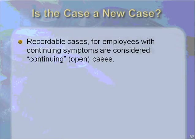OSHA is not giving us good guidance on what constitutes continuing symptoms — whether it's pain once a month, once a week, or once an hour. You need good documentation in order to continue to consider an open case, but it no longer needs to have one of the severity criteria being met. For instance, you may have been on prescription medication for pain and are now on over-the-counter Tylenol. OSHA would consider somebody with continuing symptoms to be a continuing or open case. We hope to have more discussion with OSHA in the future.